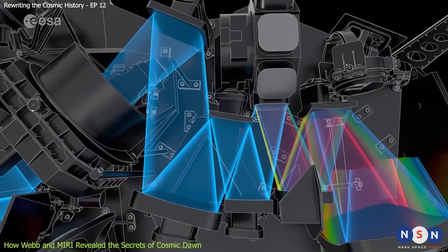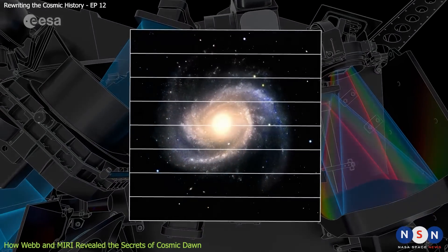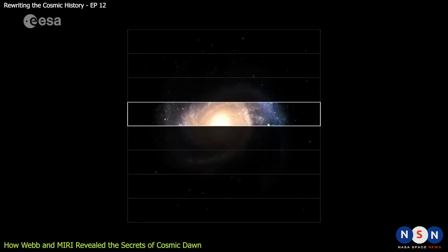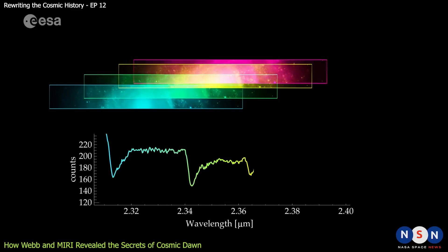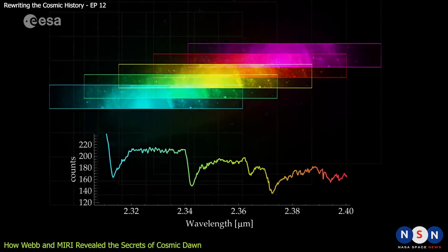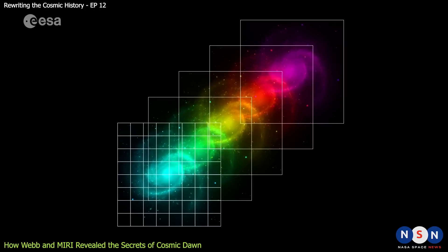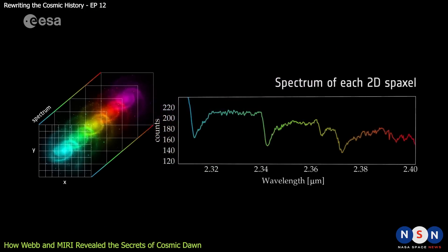Thanks to MIRI's special mode called medium-resolution spectroscopy, which allows it to measure the spectra of individual objects in a field of view. And by analyzing the spectrum of an object, we can learn about its physical properties, such as temperature, composition, velocity, and distance.